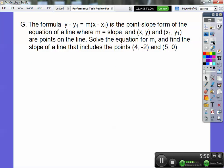The formula y minus y₁ equals m times (x minus x₁) is the point-slope form of the equation of a line, where m is the slope, and (x, y) and (x₁, y₁) are points on the line. Solve the equation for m, then find the slope that includes those two points. To solve for m, divide both sides by (x minus x₁).